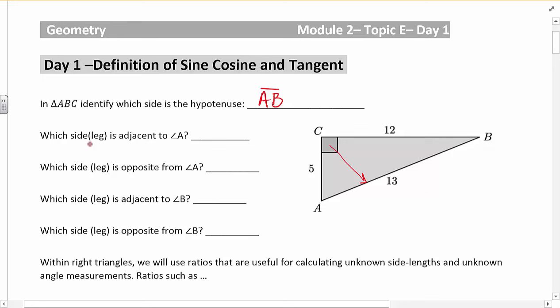Which side, also known as leg, is adjacent to A? Well, if opposite means across from the angle, adjacent means it touches the angle. So I have two things that touch angle A. I have AB, but that's already the hypotenuse, and AC. So AC is the leg that is adjacent to A. Which leg is opposite from A? So opposite from A brings me over here. That's CB.